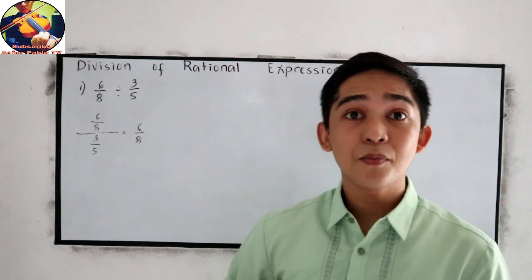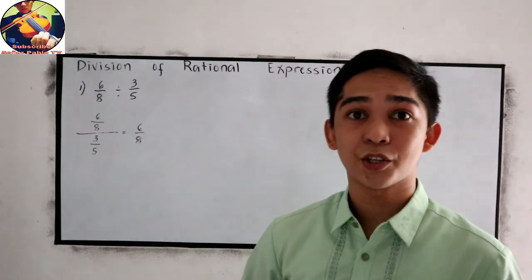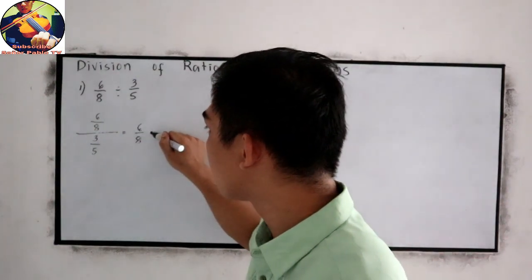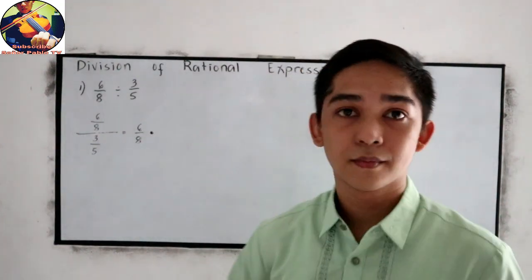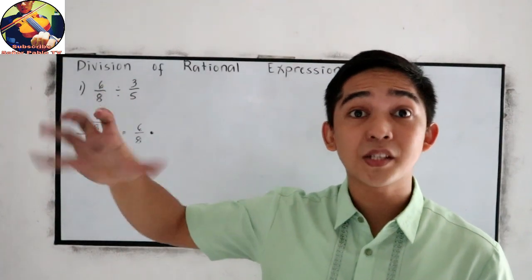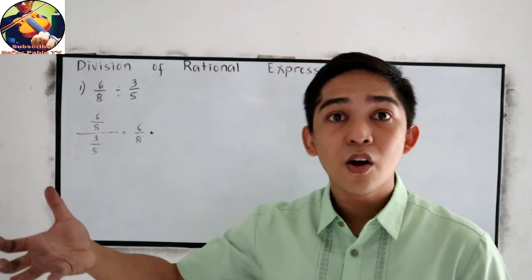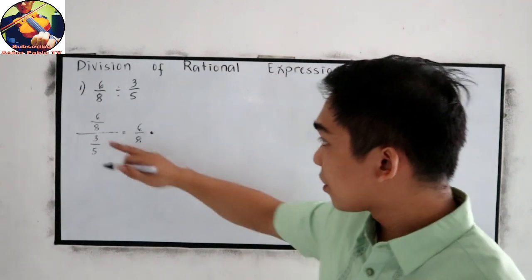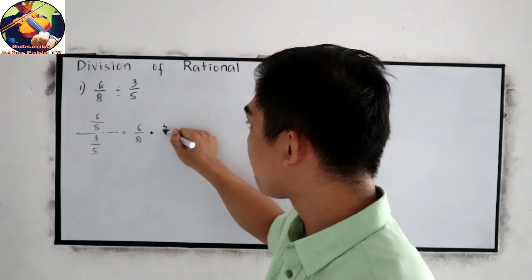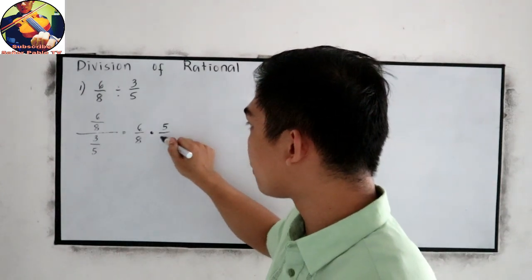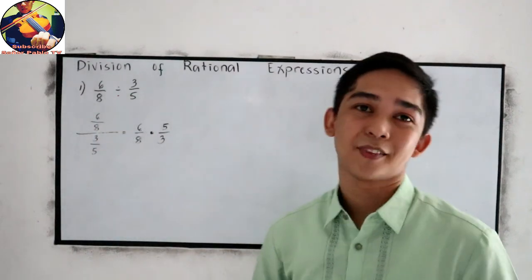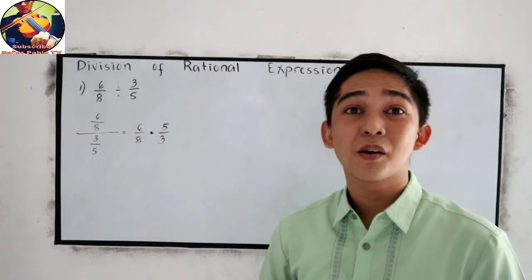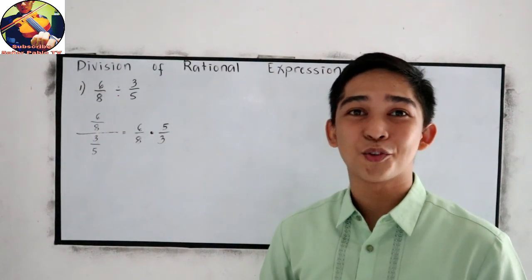Then proceed to multiplication — it will become times. Then get the reciprocal of our denominator. The reciprocal is 5 over 3. Now we're going to apply our Multiplication Rules.